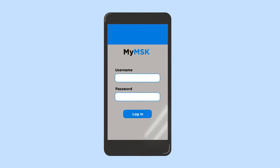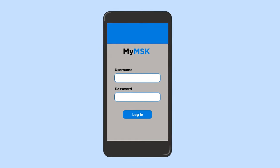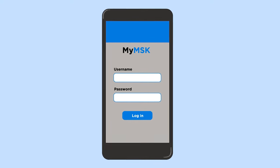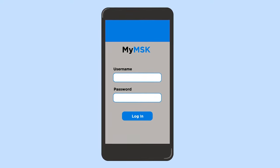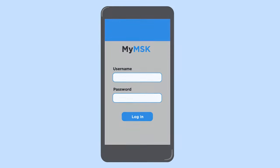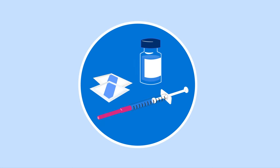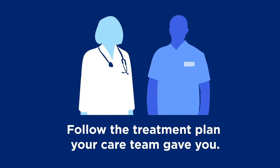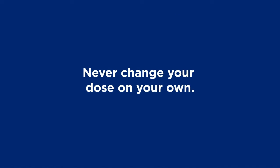Send your health care provider a message through MyMSK. Tell them your erection grade and whether you're getting the results you want. They'll tell you which dose to try next based on your response. It usually takes a few injections to find the right dose for an erection firm enough to have sex. It's important to follow the treatment plan your care team gave you. Never change your dose on your own.